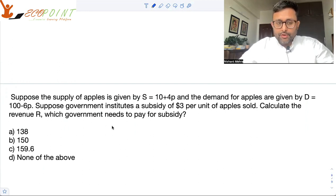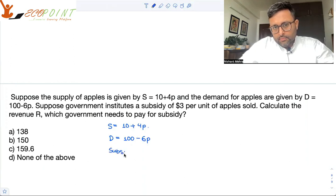Pause the video and try to do it yourself first. So you have the supply function, which is 10 plus 4p. You have the demand function, which is 100 minus 6p. And subsidy is $3 per unit.